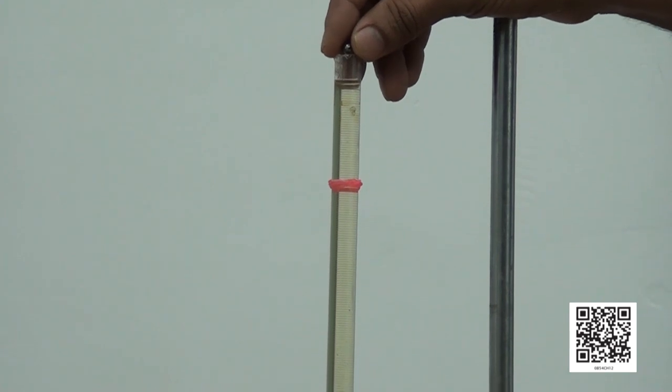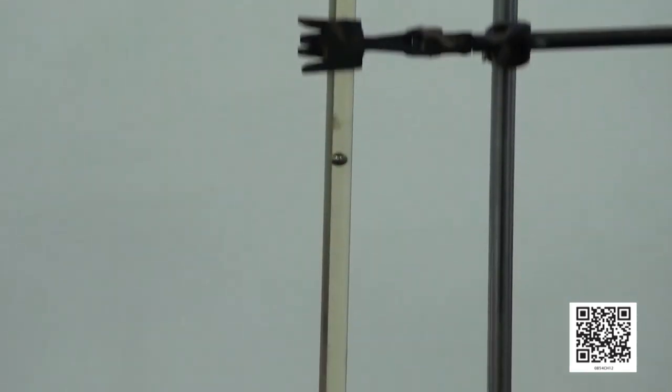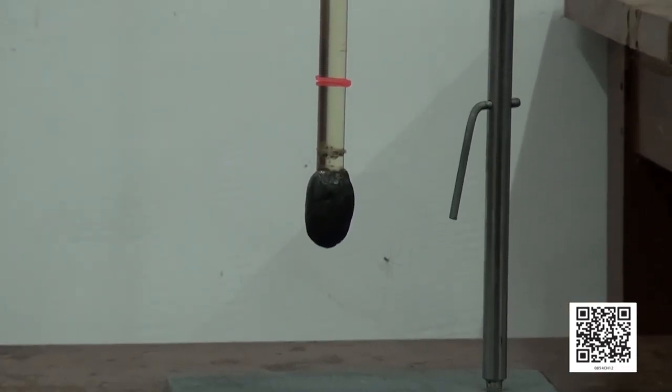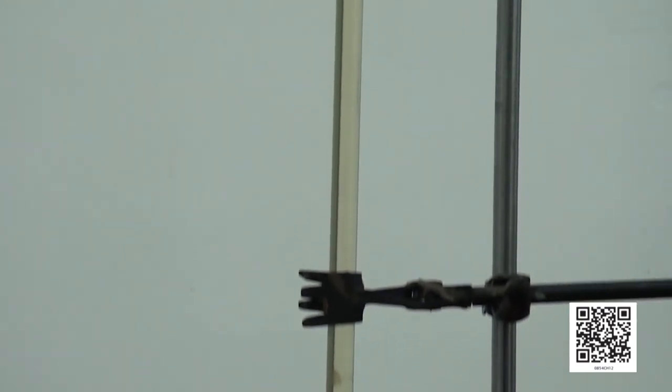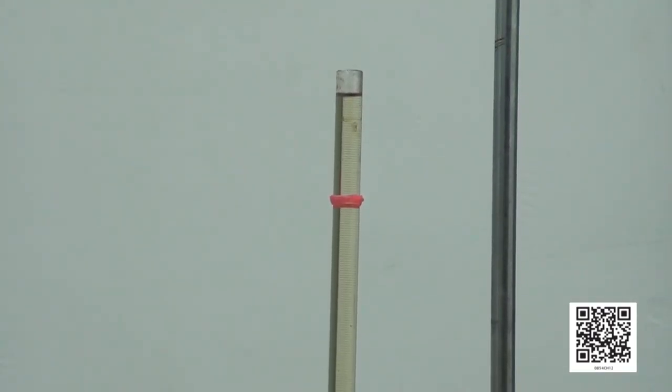So, we have seen that the frictional force on an object in a fluid depends on its speed with respect to the fluid. The frictional force also depends on the shape of the object and the nature of the fluid. These are the factors affecting the fluid friction. Is it clear to you?